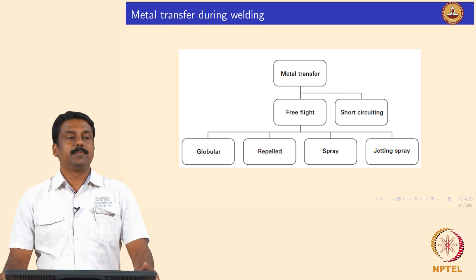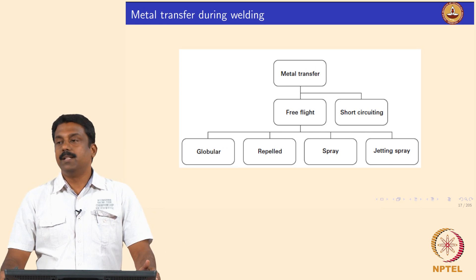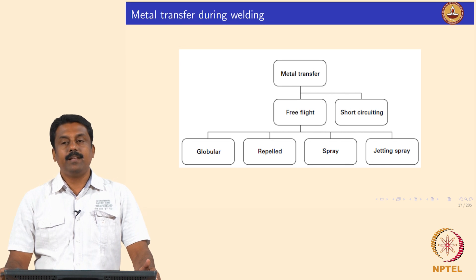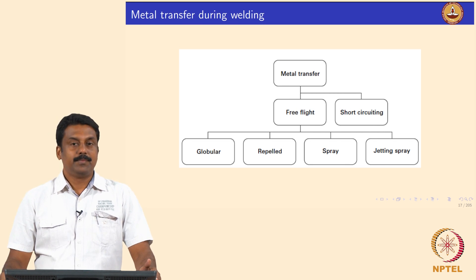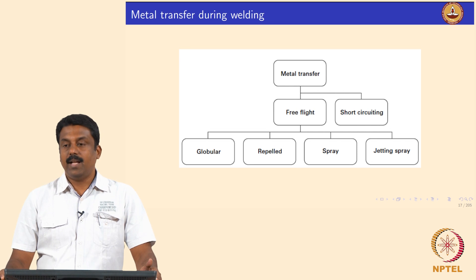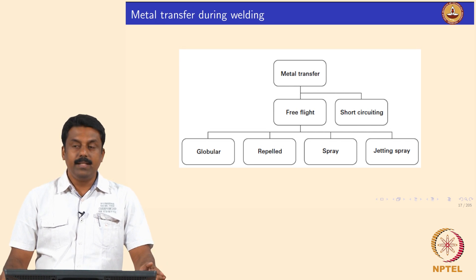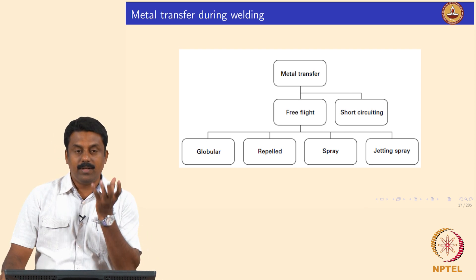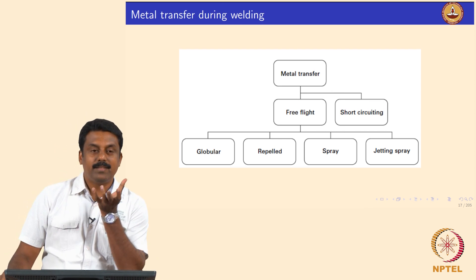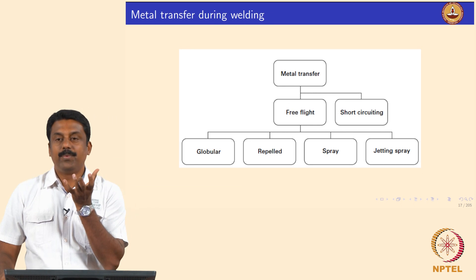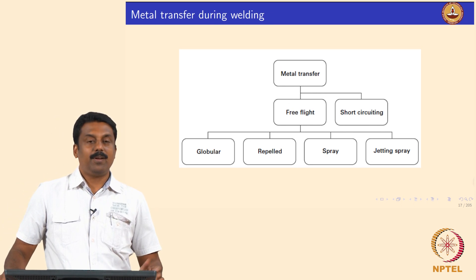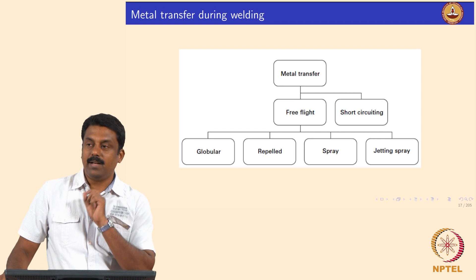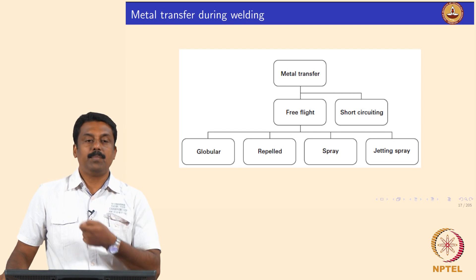Based on the force balance, you may have the droplet transferred in various modes. In most cases, the diameter of the droplet and the frequency of droplet transfer will be determined by which force is rate controlling. If gravity is rate controlling, the droplet will be transferred with high mass like a globe — the volume will be higher. If Lorentz force is rate controlling, you can transfer very small diameter droplets at much higher frequencies.